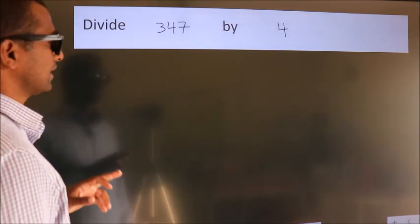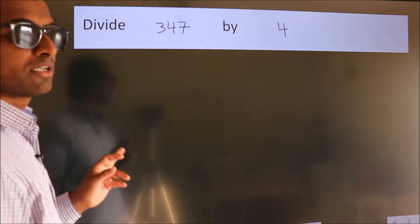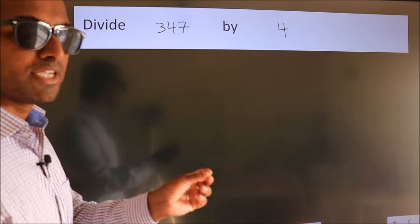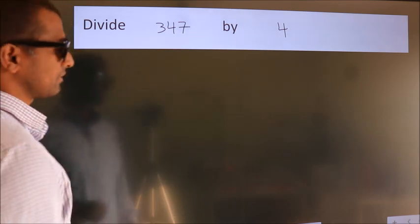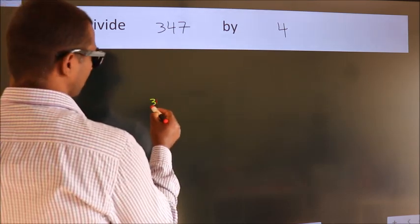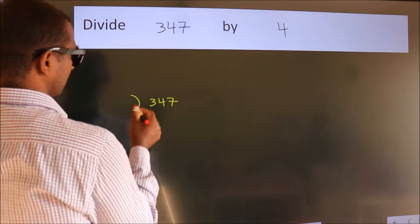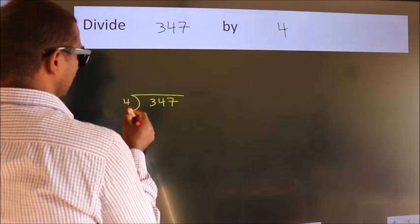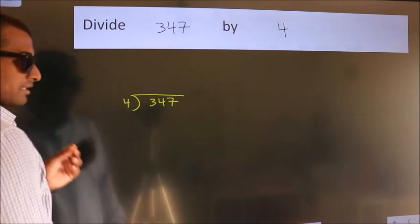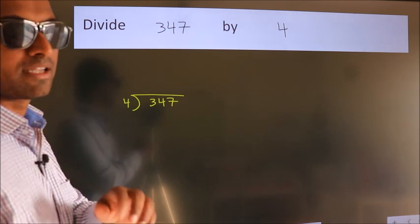Divide 347 by 4. To do this division, we should frame it in this way: 347 here, 4 here. This is step 1.